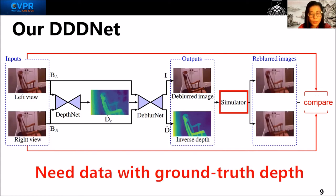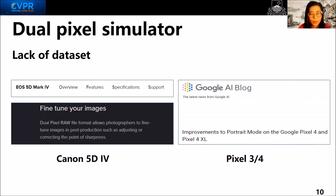To train the network, we need a large amount of DP pairs with their ground-truth depths. Only Canon and Google provide DP data to customers, though most DSLR and smartphone cameras have the DP sensor. Another problem is both sensors make it hard to get the associated ground truth information, such as depth.